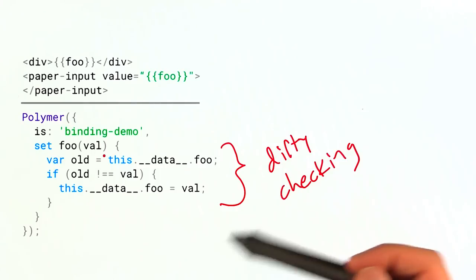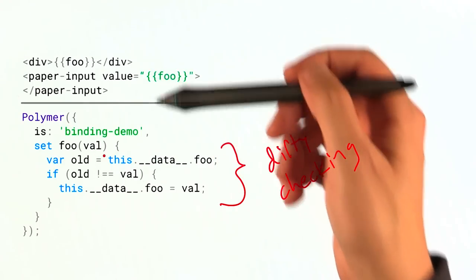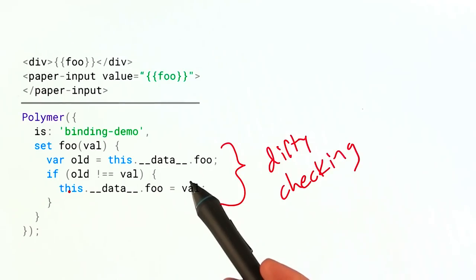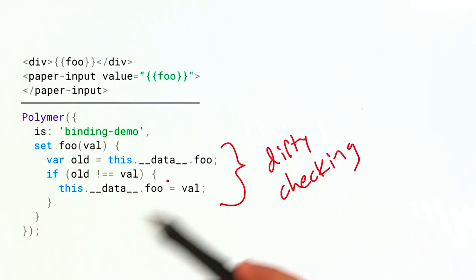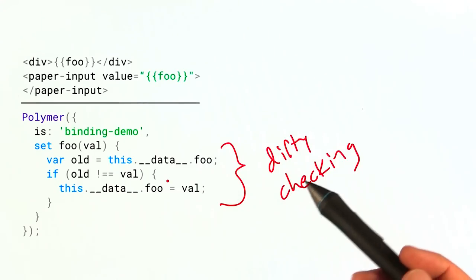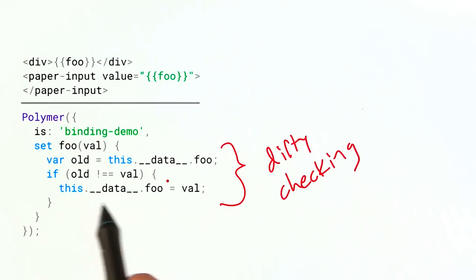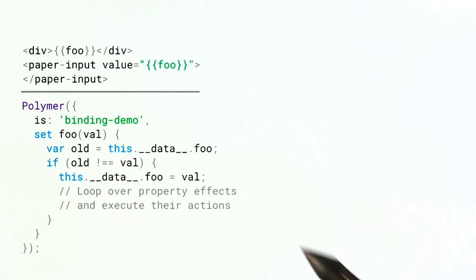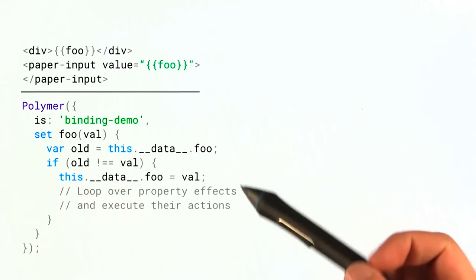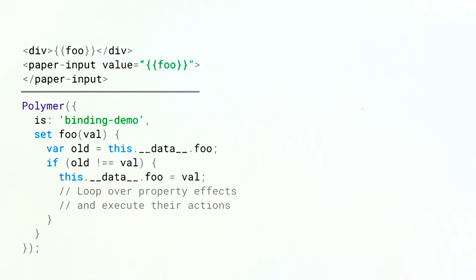And whenever someone changes the property, changes our foo property, if they change it through JavaScript or changing the attribute or something like that, it's first going to check to see if the old value and the new value are different. Because if they're the same, there's no point in doing a bunch of work. If they are different, if we do pass the dirty check, then we're going to hold on to that new value. And the next thing after that is we're just going to loop over all of our property effects, give them that new value, and then that tells them to go update these nodes in the DOM.